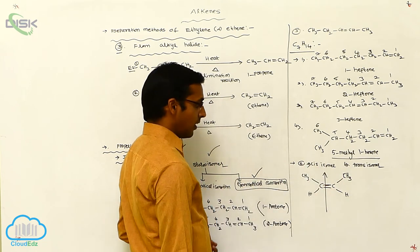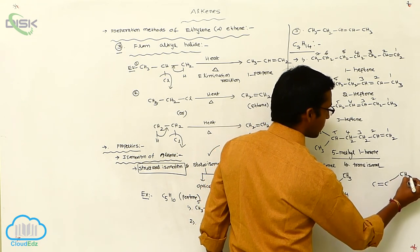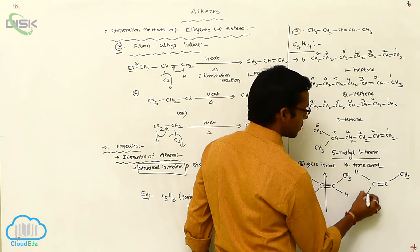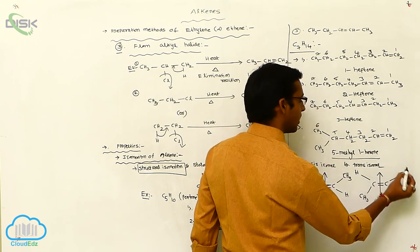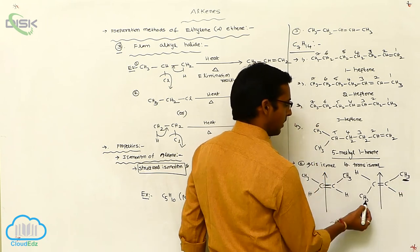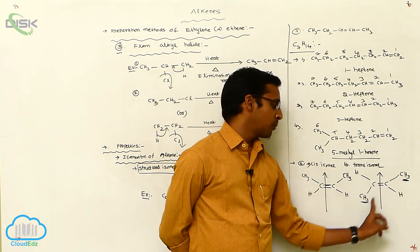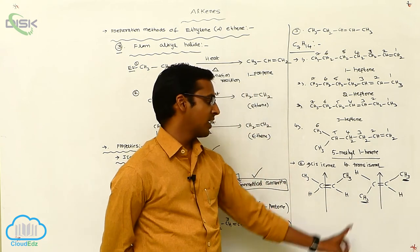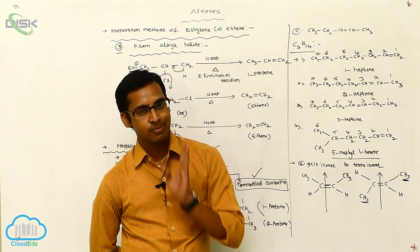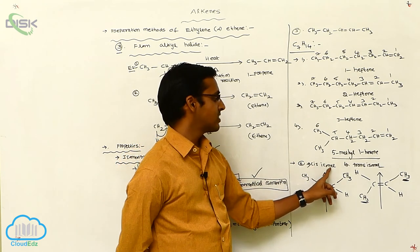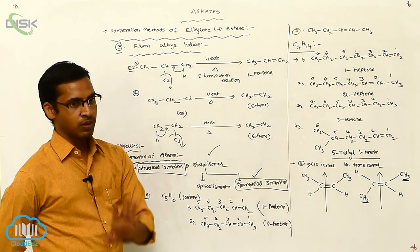Trans isomer means the plane passes through the double bond, and the identical atoms are always opposite to each other. Such an isomer is called a trans isomer. See here: the methyl group is on the top side on one carbon, and on the bottom side on the other. The identical groups are on opposite sides. The identical groups on the same side give cis isomers. These are your geometrical isomers.